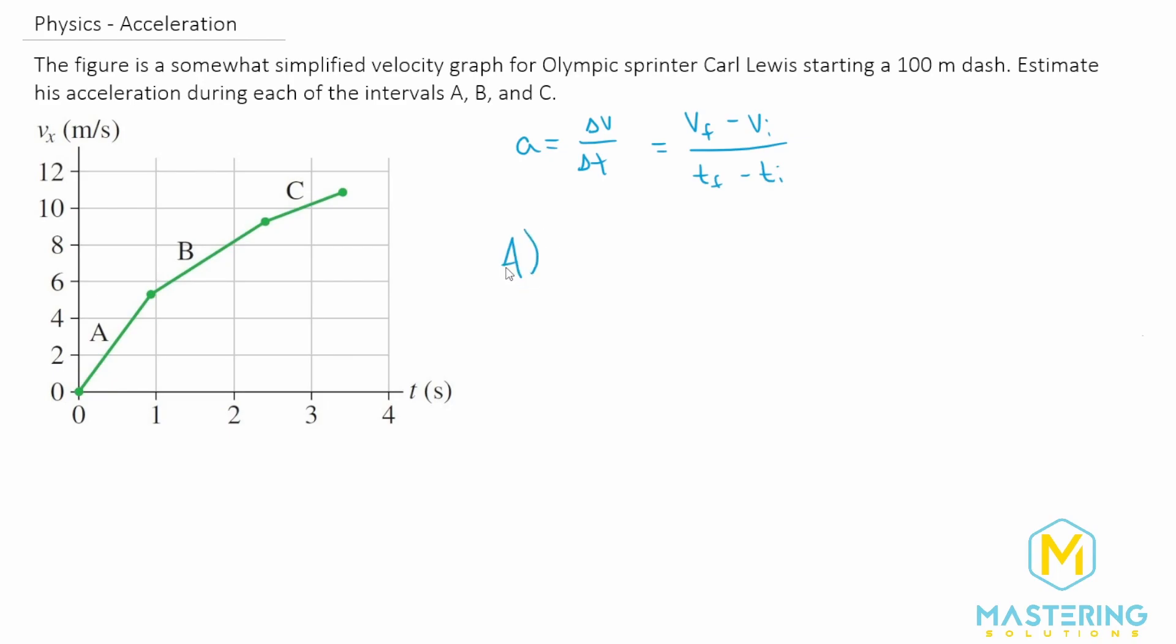So for A, we have the final velocity is, let's see, it's five and a half, a little more than five. So we'll say 5.5 meters per second. The A section is pretty easy because the initial is just zero.